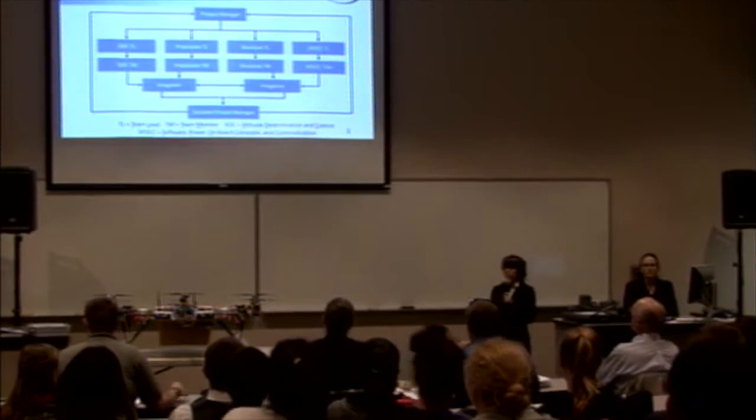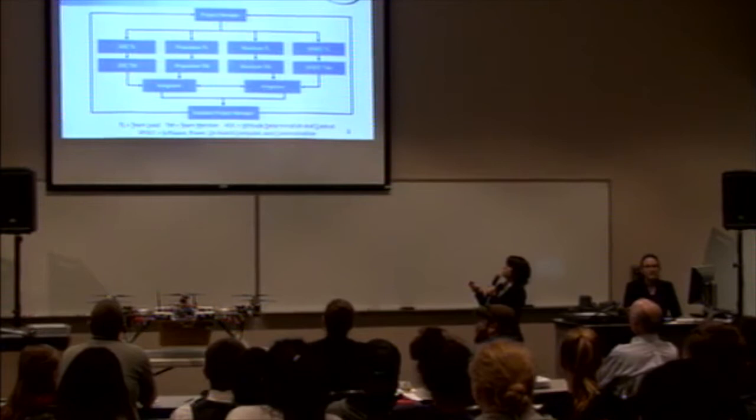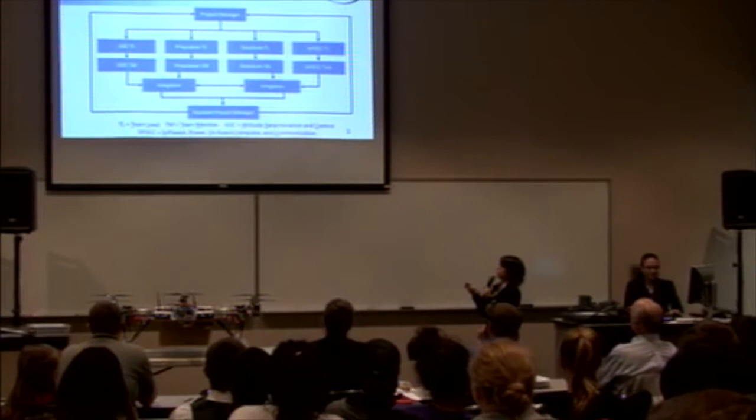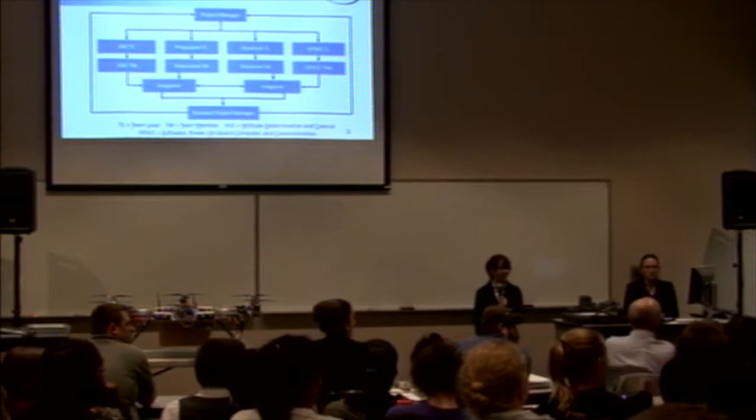Here's an overview of our team organization. The project was divided into four different subsystems, each led by a team lead as senior. Working with the team leads are the team members, and the team leads report directly to the project manager. Communicating between the subsystems are the two integrators, who report to the assistant project manager, who also reports to the project manager. My assistant project manager for this team is Benjamin Anderson.